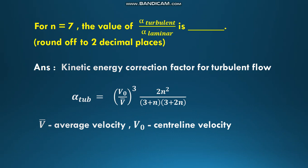For n equal to 7, the value of α_turbulent/α_laminar should be found out. The kinetic energy correction factor for turbulent flow is given as α_turbulent = (V₀/V̄)³ × 2n²/[(3+n)(3+2n)]. Here V̄ is average velocity, V₀ is centerline velocity.